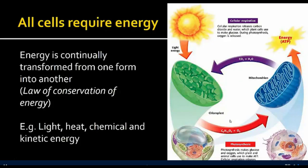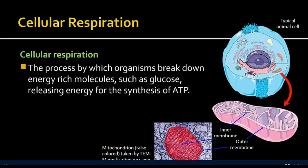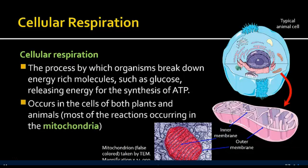Energy is continually being transformed from one form to another through the law of conservation of energy. Light, heat, chemical, and kinetic energy can all change their form — energy doesn't get destroyed, it just changes from one form to another into a more usable form for a particular organism. Cellular respiration is basically the opposite of photosynthesis — it's the process by which we break down molecules like glucose to release energy for synthesis of ATP, the cell's usable form of energy, with most reactions occurring in the mitochondria.